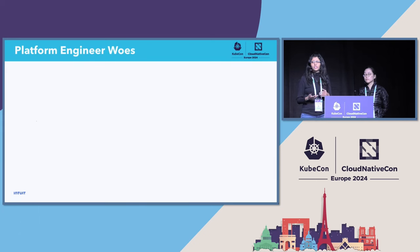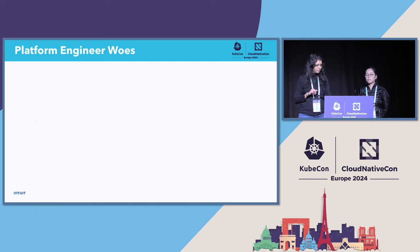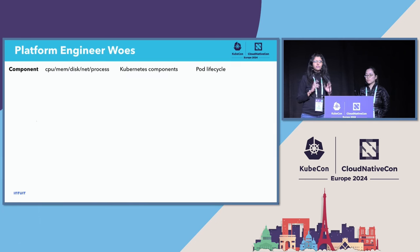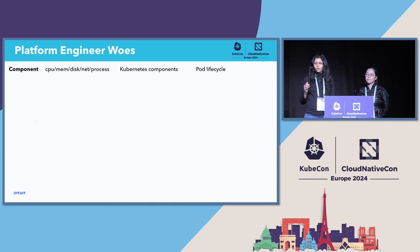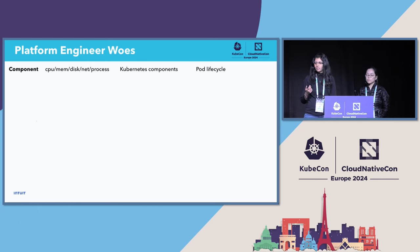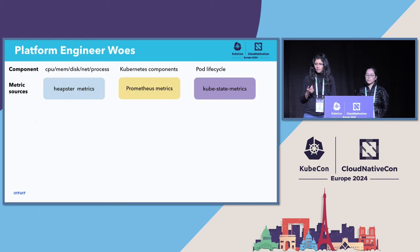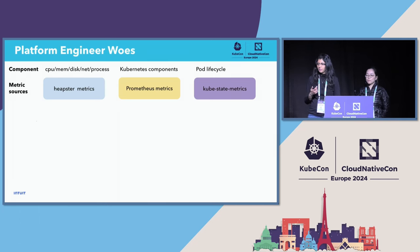What are some of the concerns that a platform engineer might have, especially when they go on call? There are a bunch of components we monitor in a Kubernetes cluster — whether it's per node with respect to CPU, memory, disk, network, or processes. There are Kubernetes components that get monitored, and then there is pod life cycles. The metric sources for node components, we use Heapster; for Kubernetes, we use Prometheus; and for pod life cycle, we use kubestate metrics. These are the main ones, and all of these alert our platform engineer.